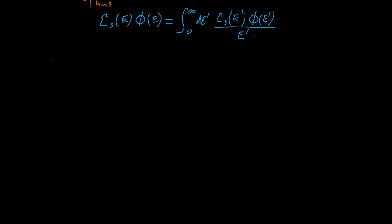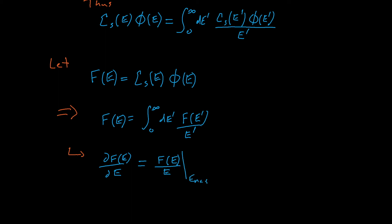Now we'll define some term f of E, which is equal to sigma s times the flux. This simplifies our slowing down equation to f of E equals the integral of f of E prime divided by E prime. Taking the derivative of both sides yields this expression, where the derivative of f is equal to f over E evaluated at the upper and lower energy bounds for our previous scattering source integral.